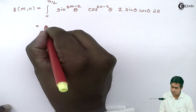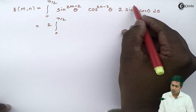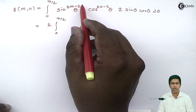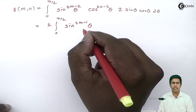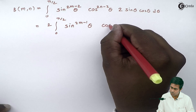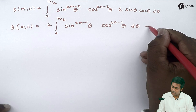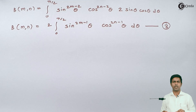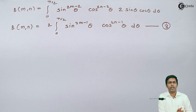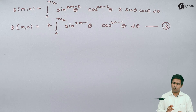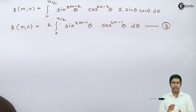Solving this, we take 2 outside the integral from 0 to pi by 2. The sin term with power 1 multiplied by sin raised to 2m minus 2 gives sin raised to 2m minus 1 theta. Similarly, cos gives cos raised to 2n minus 1 theta dθ. This is the second form of the beta function — equation 3. This form is useful when the question involves trigonometric functions; whenever the integration has only trigonometric terms, we use this second form.